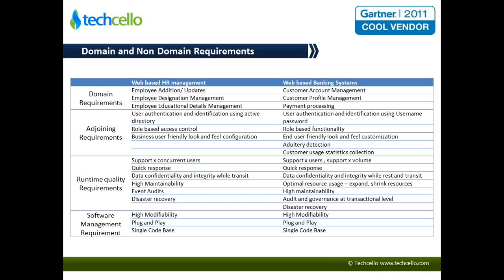An additional consideration is that adjoining requirements may vary from case to case. In this example, the banking system, in addition to role-based access control and user management, may require an anomaly detection kind of feature which can avoid improper usage of the system or detect someone trying to do something irregular. So that becomes an adjoining requirement in this case.